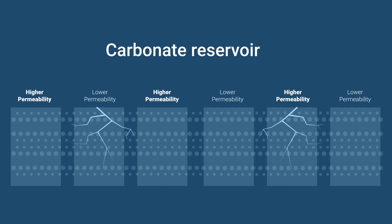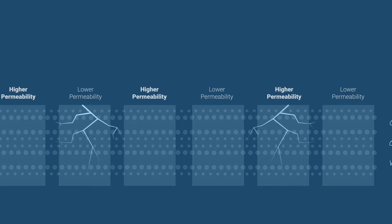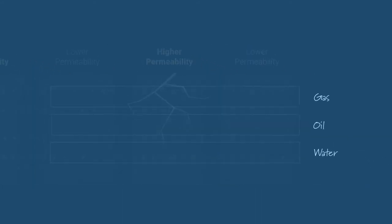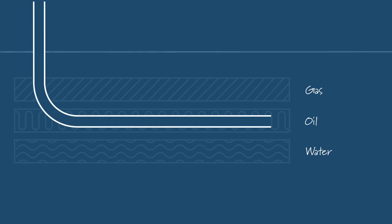It's due to this reservoir heterogeneity, the three different fluids of gas, oil and water, and the shape of the horizontal wellpipe, that two inescapable laws of physics come to negatively affect the fluid inflow along the length of the well, namely Darcy's law and the heel-toe effects.